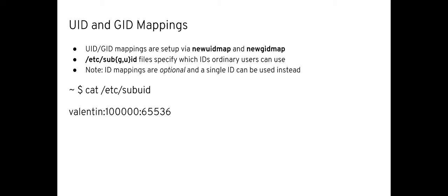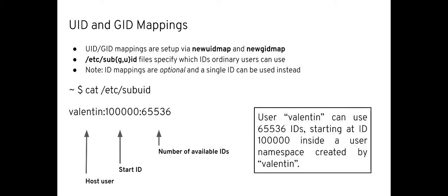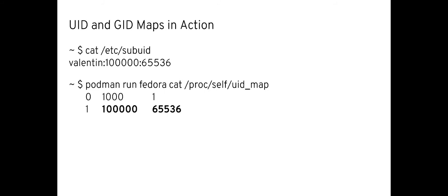Let's go back to /etc/subuid and look at how this file looks. We see three fields: the first one is the host user, the second one is the starting ID of host UIDs, and the third one is the size of the mapping — basically the number of available IDs. In a more human-friendly way, this means that user Valentin can use 65K IDs starting at ID 1000 inside a user namespace created by user Valentin.